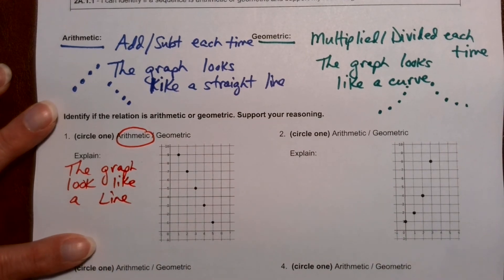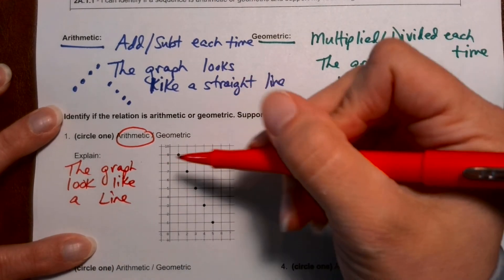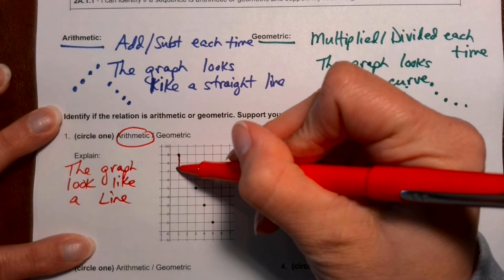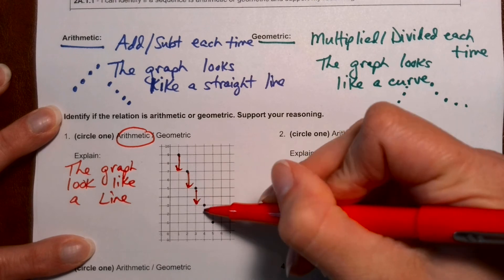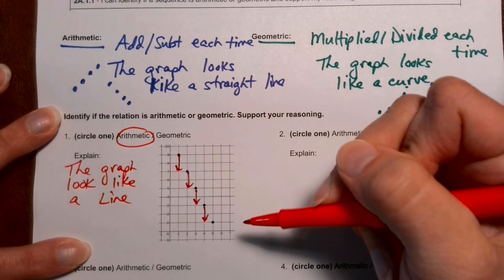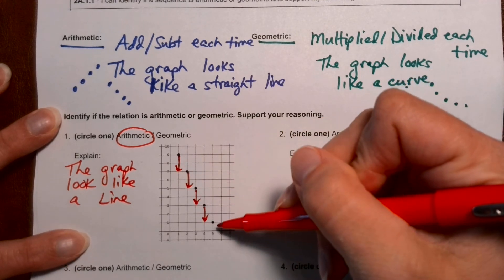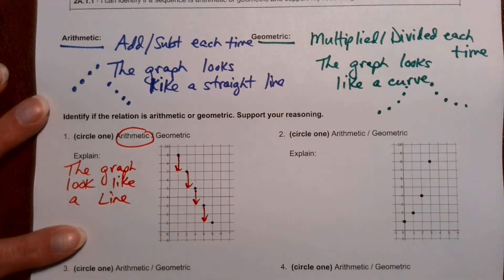Okay, I could also study these points and notice a pattern. How it's going down two each time, down two each time, down two. So you could say that it's getting subtracted by two each time if you want to study the graph.